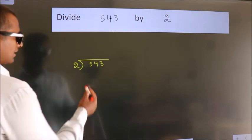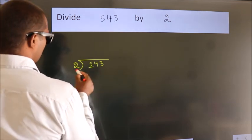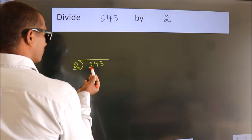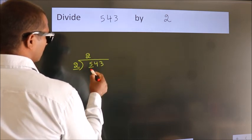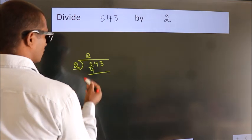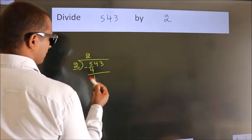Next, here we have 5, here 2. A number close to 5 in 2 table is 2 times 2, 4. Now we should subtract. We get 1.